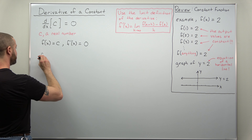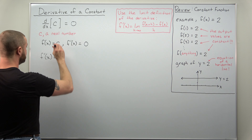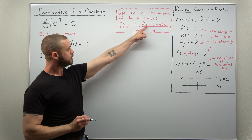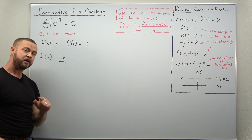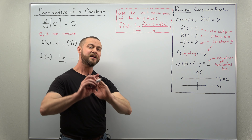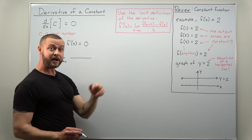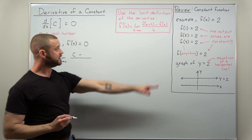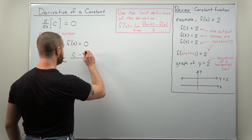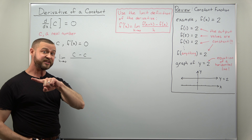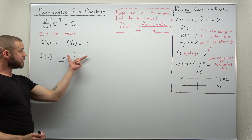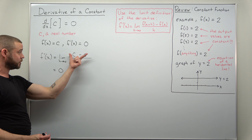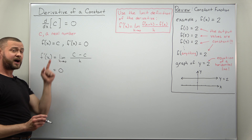Let's go ahead and calculate f prime of x using the limit definition. We have a limit as h goes to 0. The first step: we plug in x plus h to this function. For any constant function, the output is always the same value, which will be c — so plugging in x plus h gives output c. The other part is we plug in the original function f of x, which is just c. So in the numerator of the limit definition we get c minus c, over h. Simplifying, c minus c is 0, so it doesn't even matter what happens with the limit as h goes to 0. We get the derivative of a constant as 0.